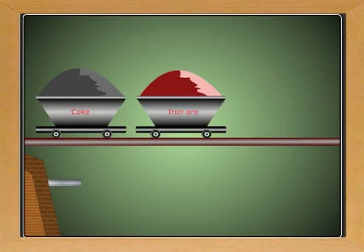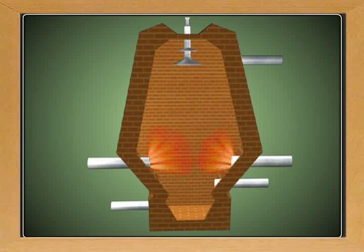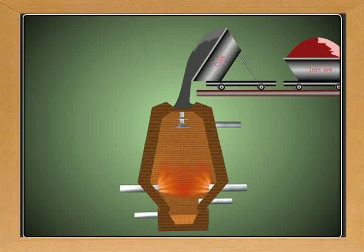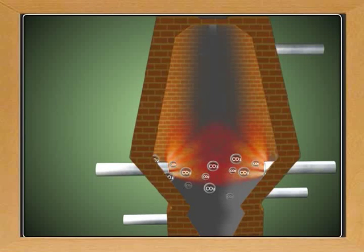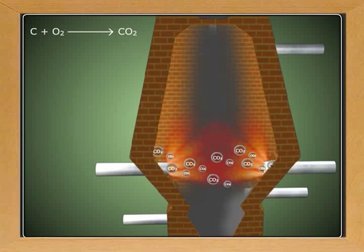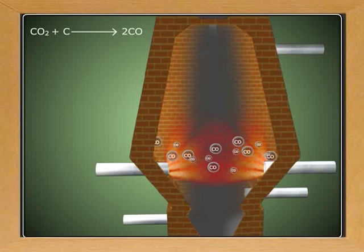Coke, iron ore, and limestone are introduced from the top. Hot air is blown to the top of the furnace through the inlets on either side at the bottom. The high temperature at the bottom of the furnace causes combustion of coke, forming carbon dioxide. The carbon dioxide moves up and reduces to carbon monoxide upon contact with coke.